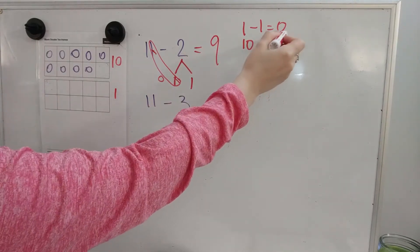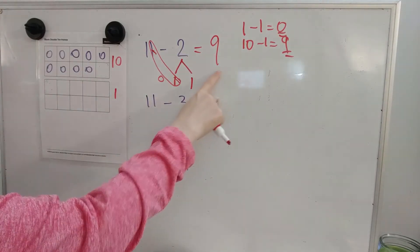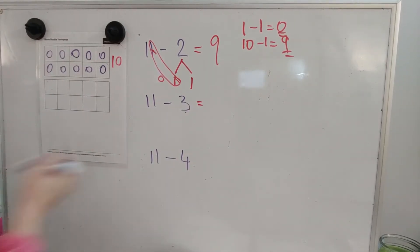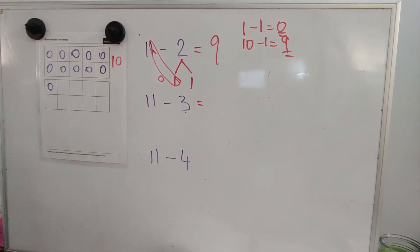If you add those leftovers, 0 plus 9, the answer is 9. Let's do 11 minus 3.